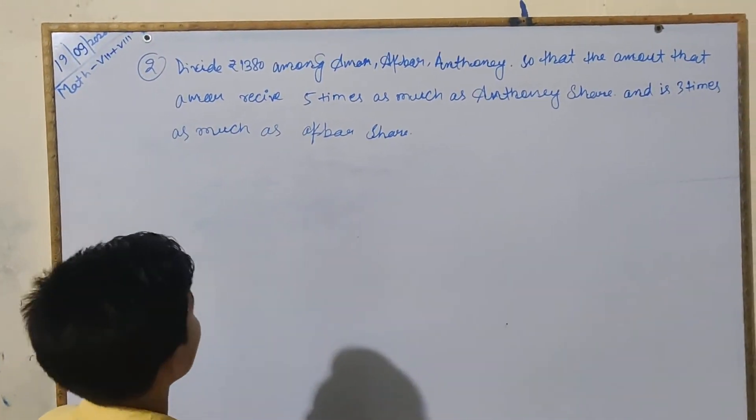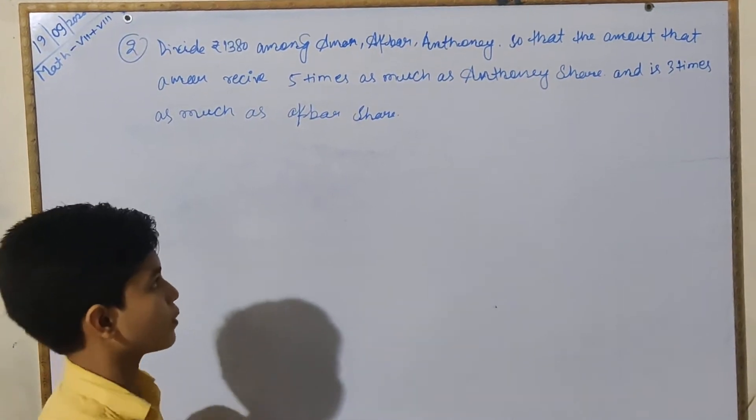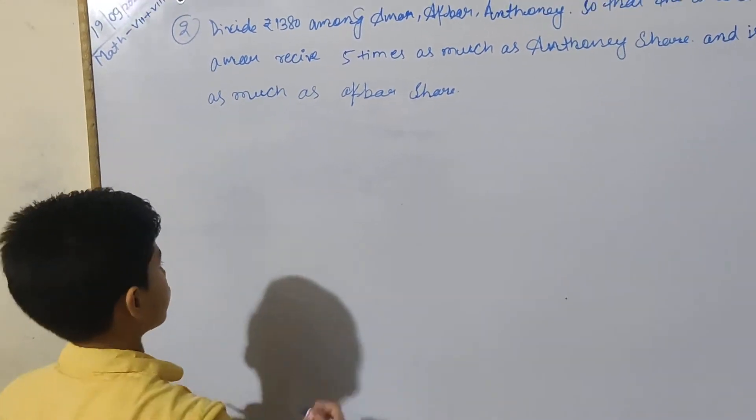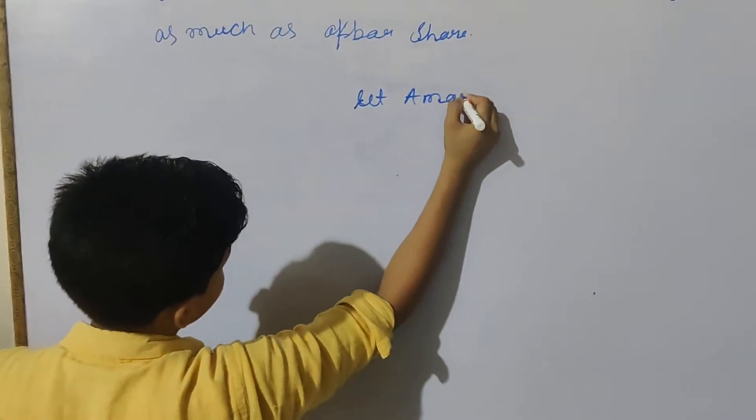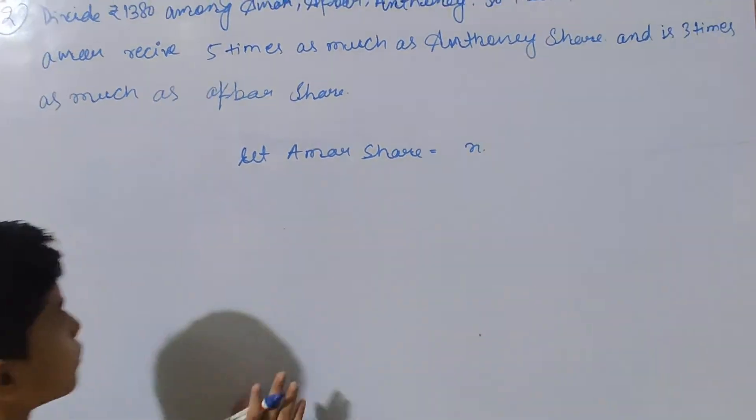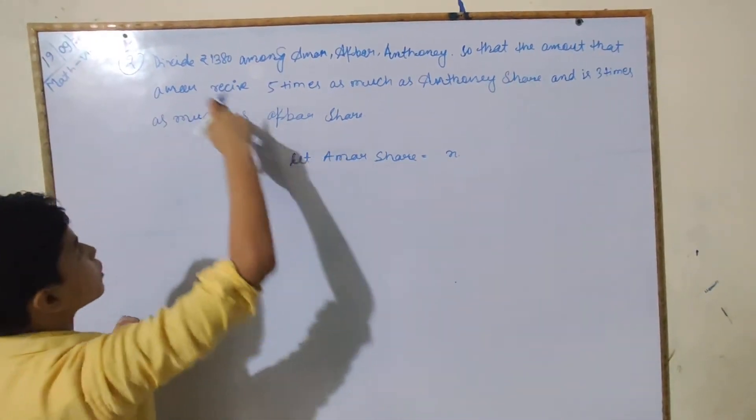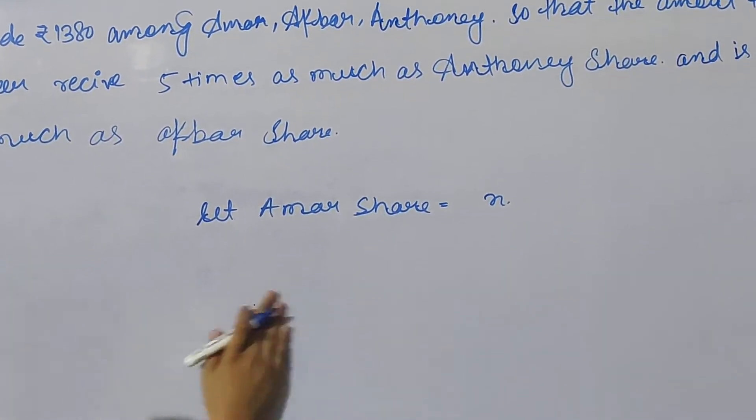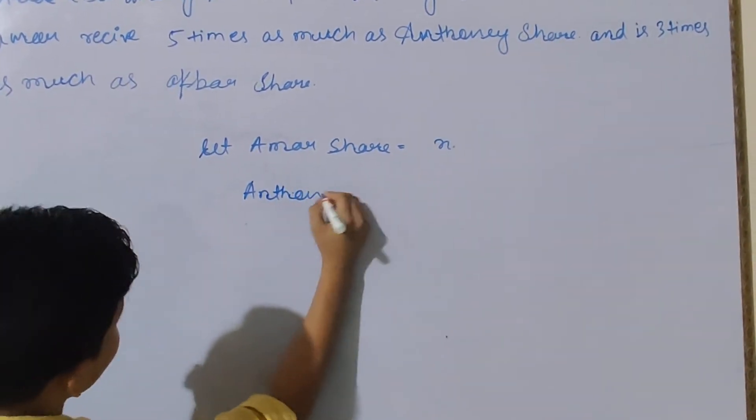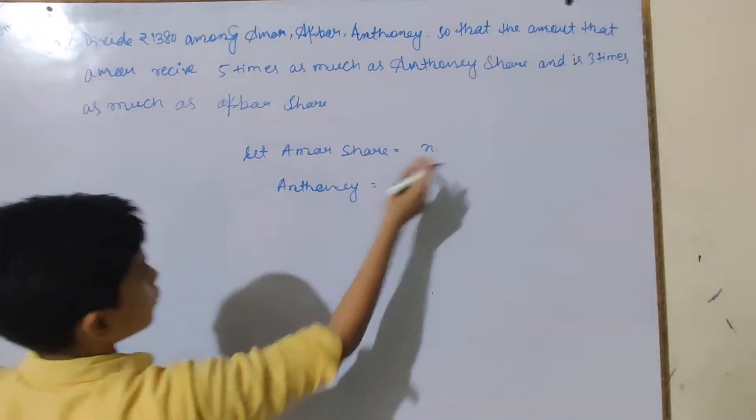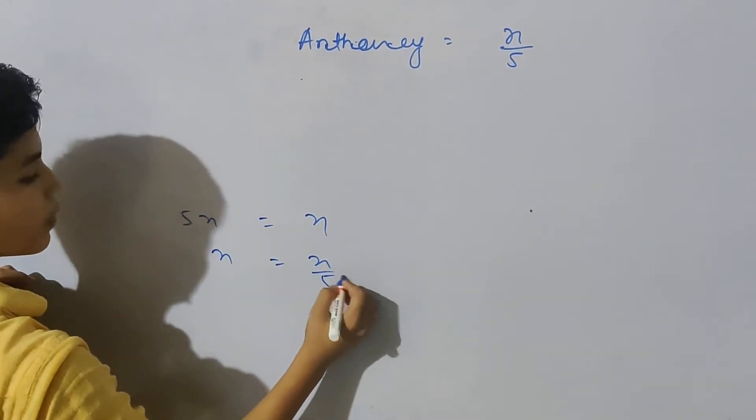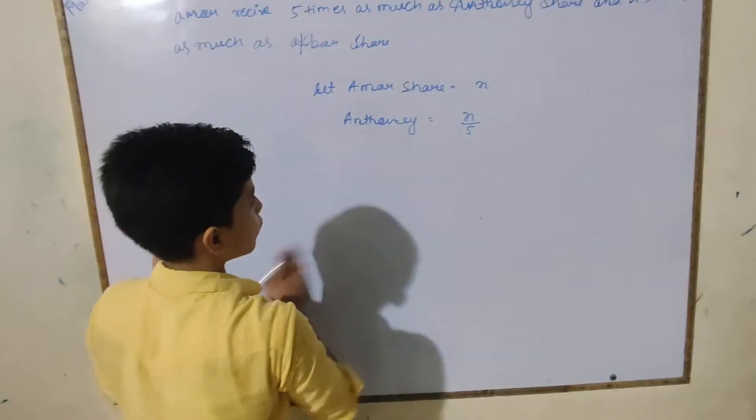Amar has the share with us. If Amar's share is 5 times Anthony's and 3 times Akbar's, let Amar's share equal x. If this is 5 times, then Anthony has x/5.